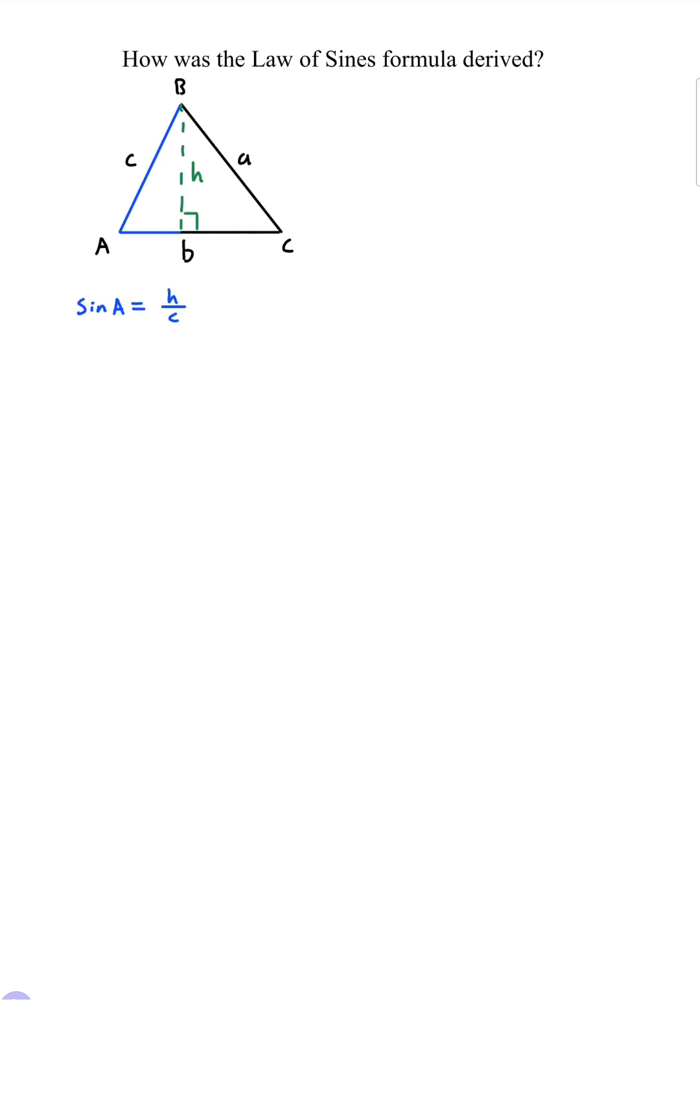Next we'll take a look at this blue part and then we have sine of A is equal to opposite H over hypotenuse c. Multiply both sides by c you get c sine of A equals h.